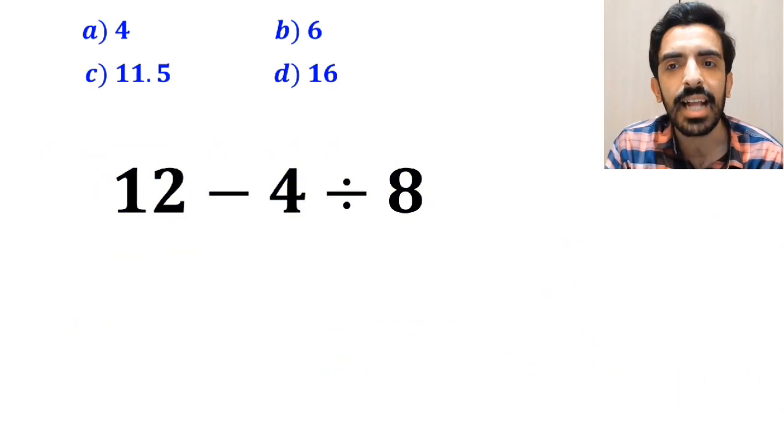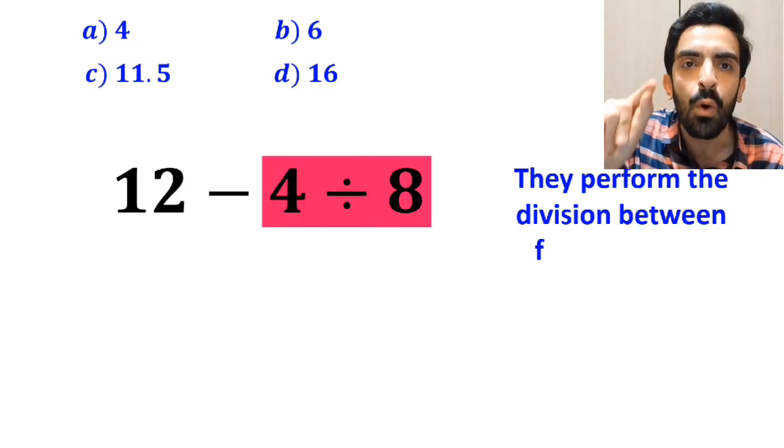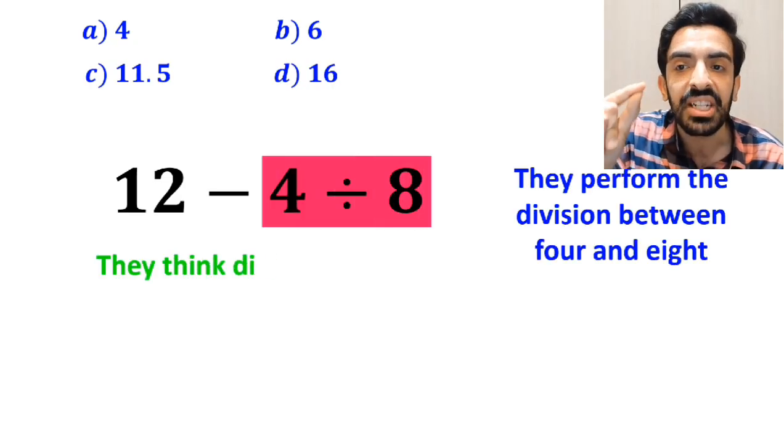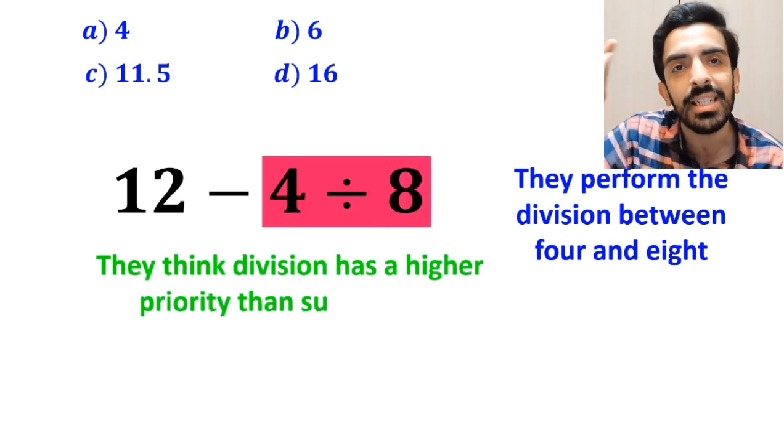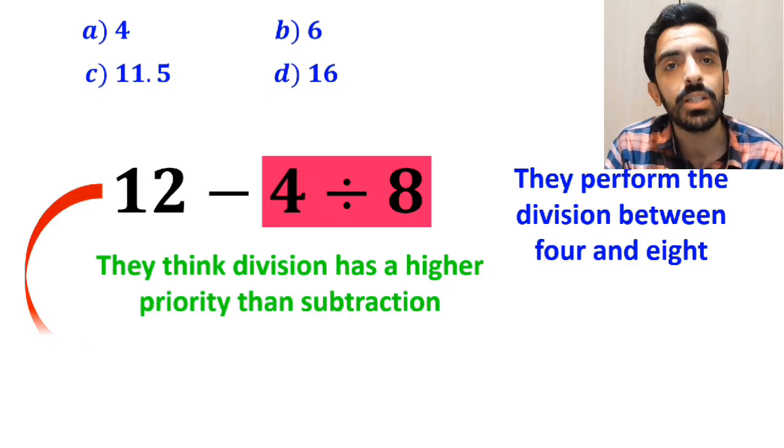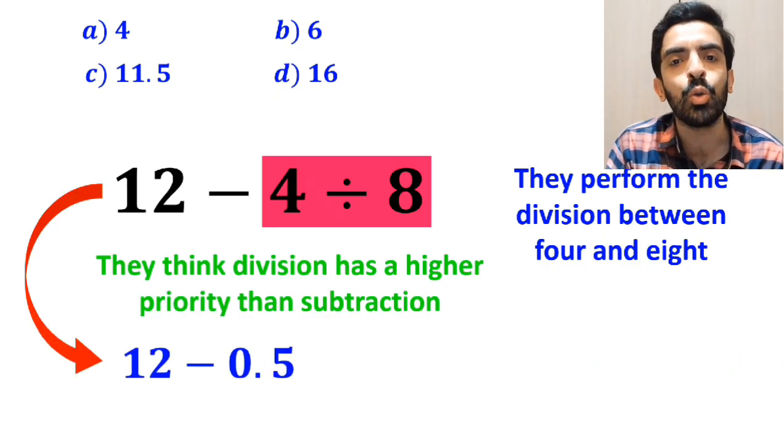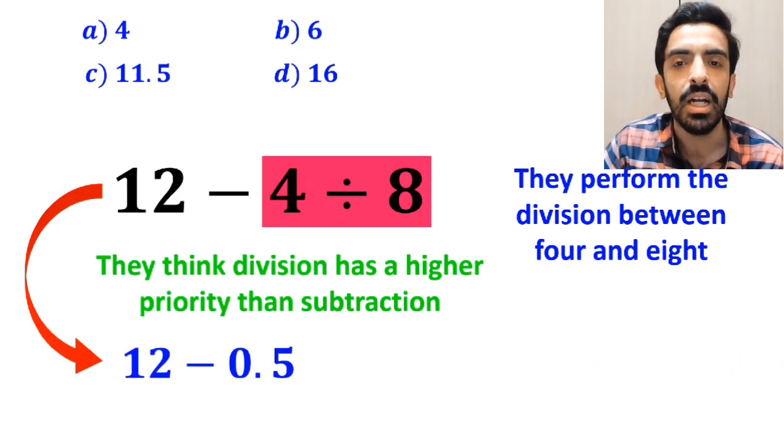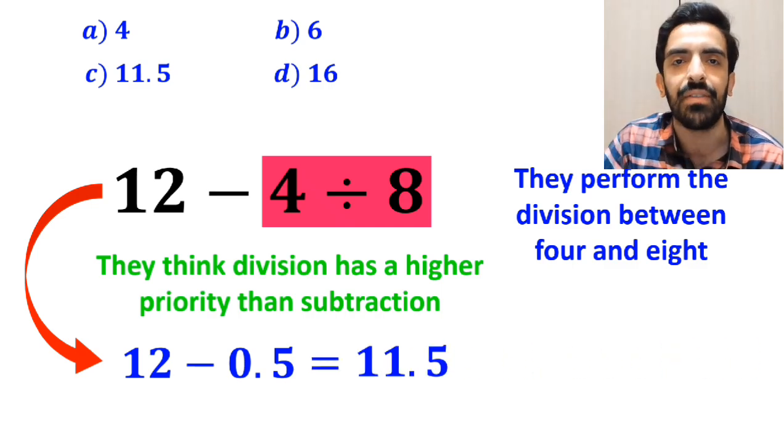In the final step, they perform the division between 4 and 8 because they think division has a higher priority than subtraction. So they simplify this expression to 12 minus 0.5, which eventually gives them the answer 11.5.